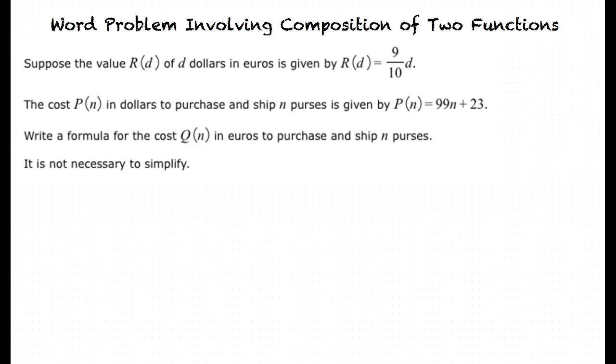Our next example will be, suppose the value r of d of d dollars in euros is given by r of d equals 9 over 10 times d. The cost p of n in dollars to purchase and ship n purses is given by p of n equals 99n plus 23.